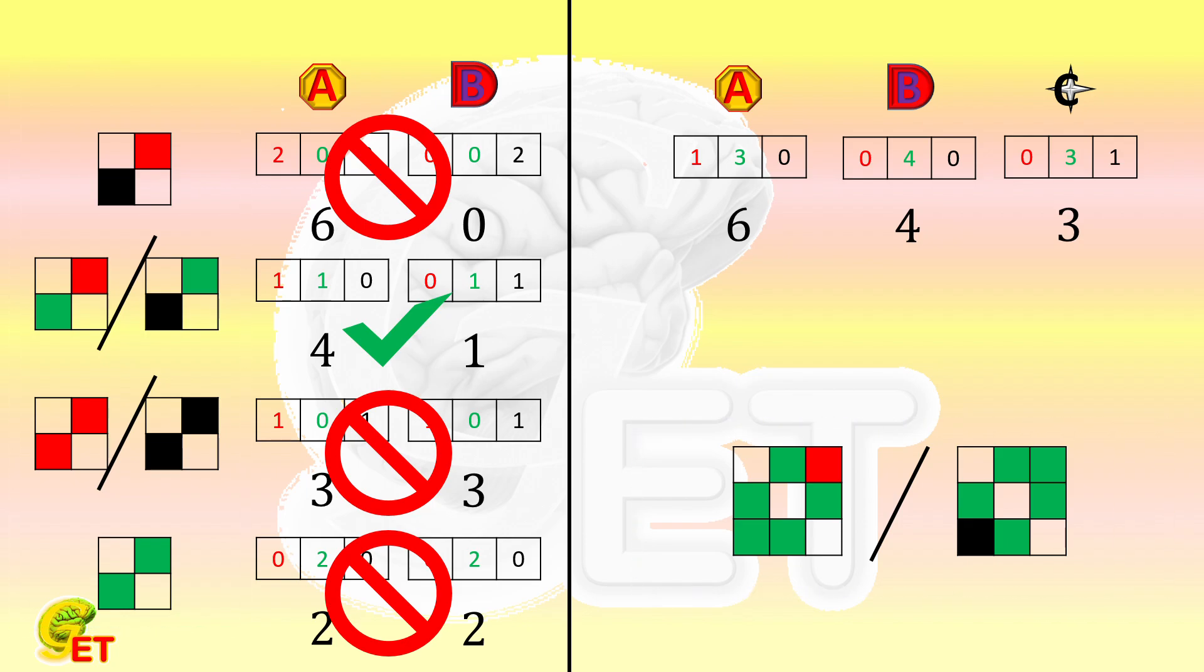If without the requirement that no 2 teams have the same score, the answer is obviously that all games end in a draw. But now we have this requirement. There will be some games that don't end in a draw. And, at most, only 1 team finished their all games in a draw.